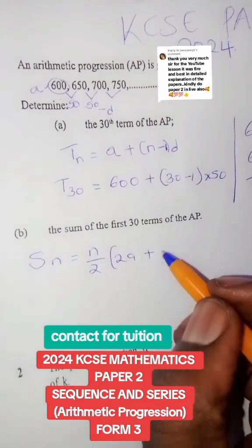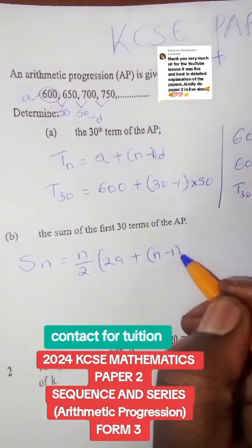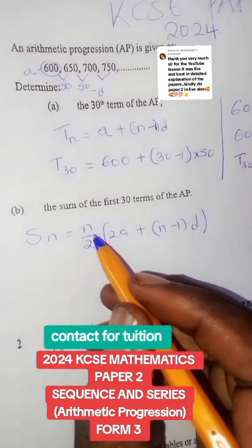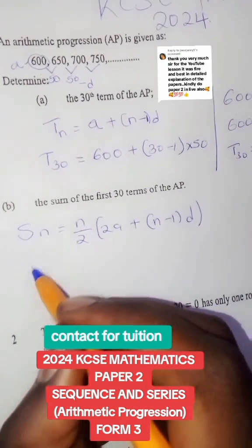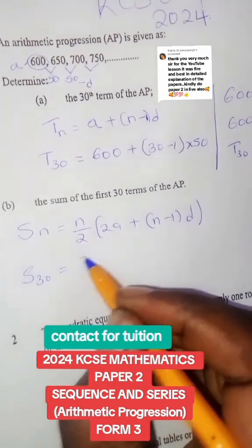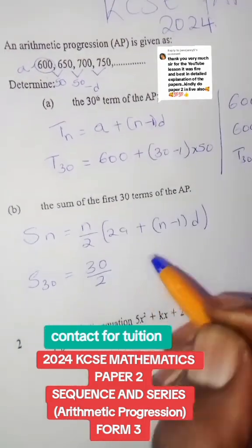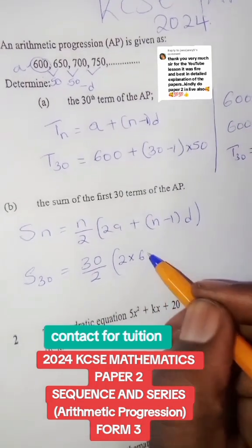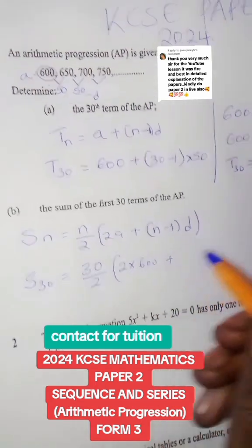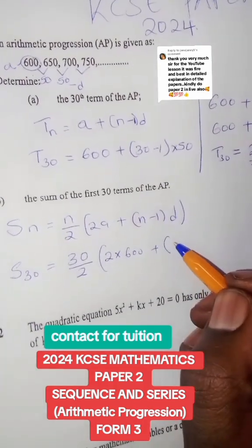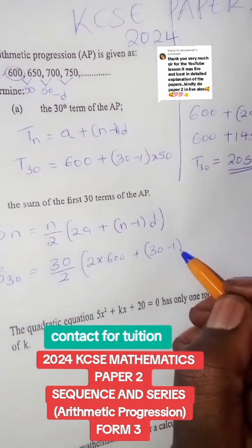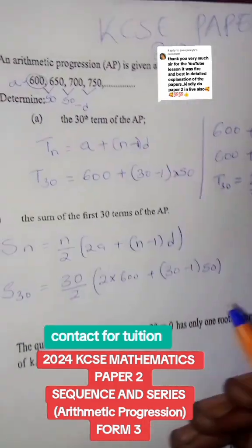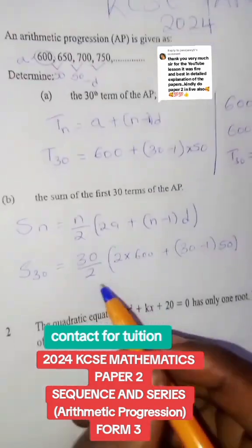Using the formula 2a plus n minus 1 d, therefore n is the 30th term, so the sum of the 30th term we will have 30 divided by 2 into 2 times the first term which is 600 plus n which is the 30th minus 1, the common difference is still 50. So we are going to say we have 15.